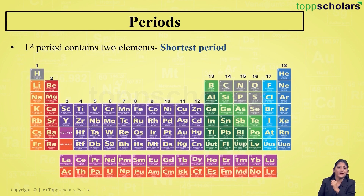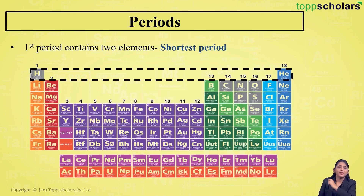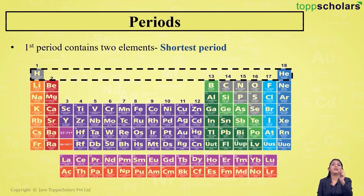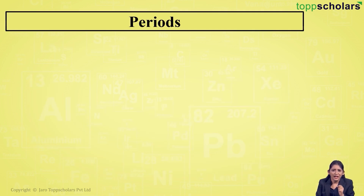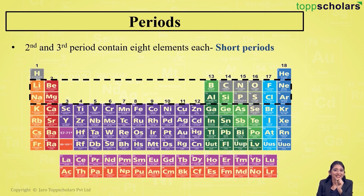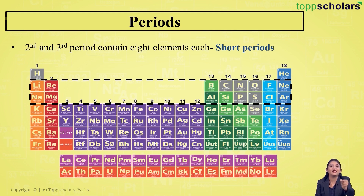Period number one has only two elements — hydrogen and helium. Since it has only two elements, period number one is called the shortest period. Periods two and three each have eight elements, so they are called short periods.